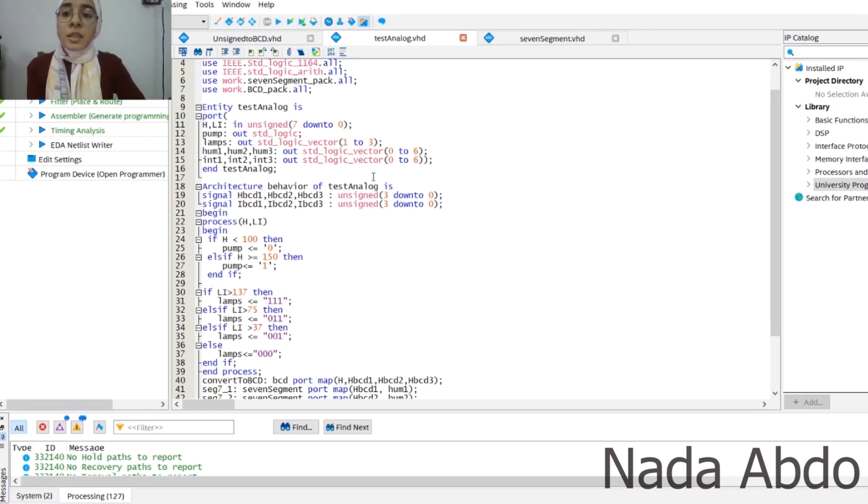The entity of the code has two input vectors because these inputs correspond to the digital reading of the sensors. We also have one output to control the pump and a three-bit output vector to control the lamps. We also have six seven-bit vectors to display the reading of the sensors on the seven-segment display.